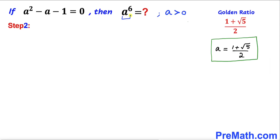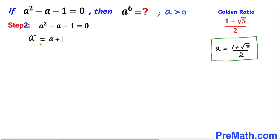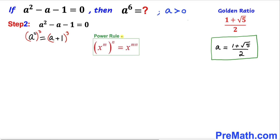Now we are going to find the value of a⁶. Let's focus on the given quadratic equation. Moving the negative a and negative 1 to the other side gives us a² = a + 1. Now let's take a cube on both sides. On the left-hand side, using the power rule of exponents, we multiply the exponents to get a⁶.